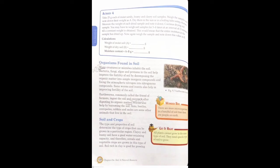Some worms and insects also help in improving soil fertility. Earthworms are commonly called the friends of farmers. They digest the soil and extract nutrients, and their waste material is organic matter that is good for soil fertility. Worms also help by boring through the soil, improving aeration. Worms, bats, centipedes, rabbits, and moles are some other animals that live in the soil.